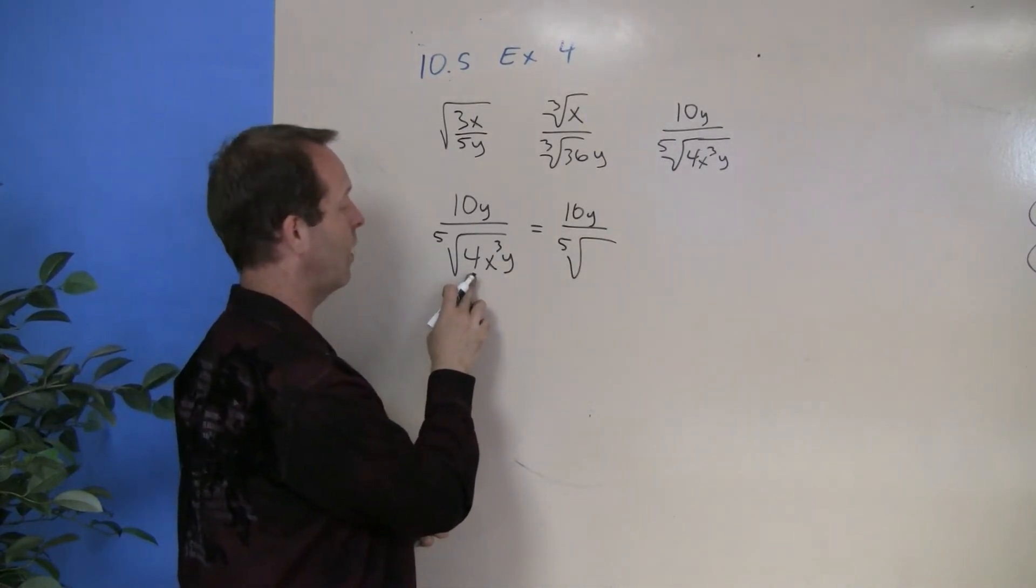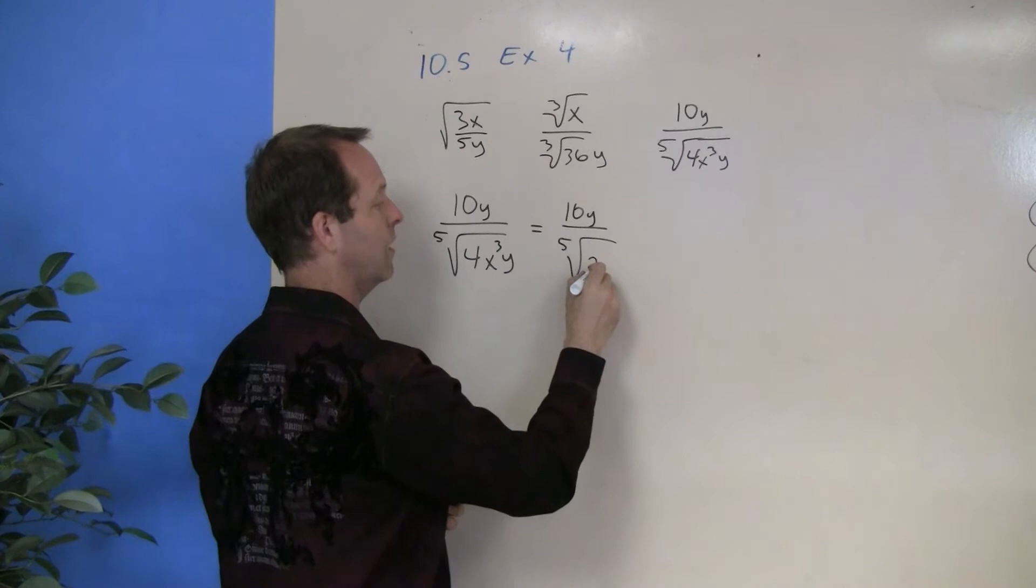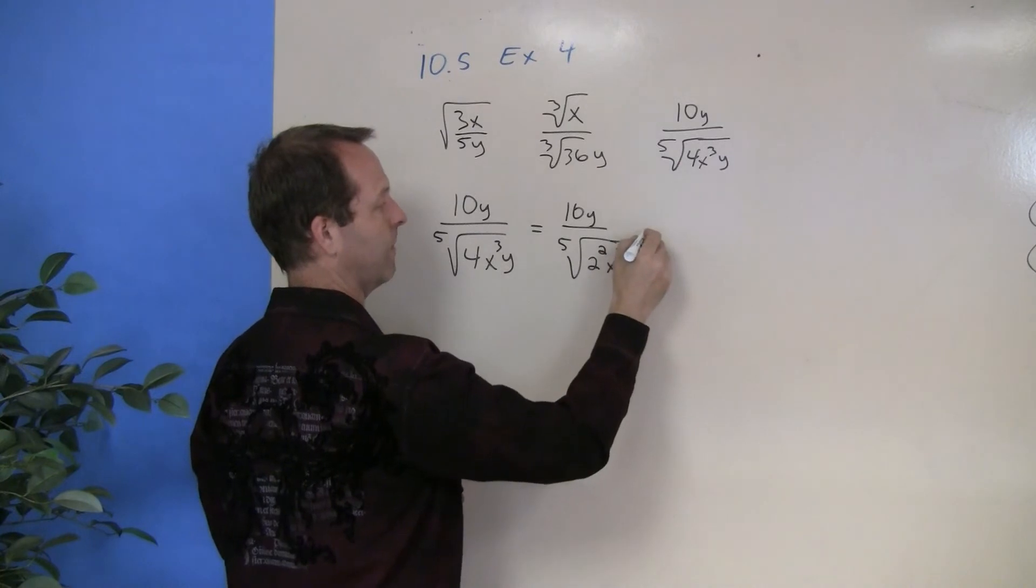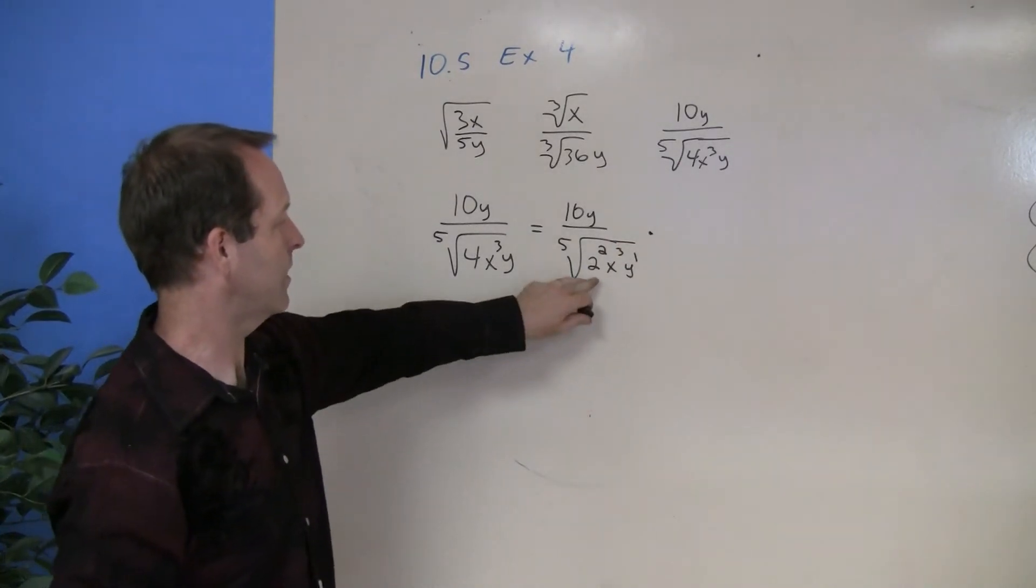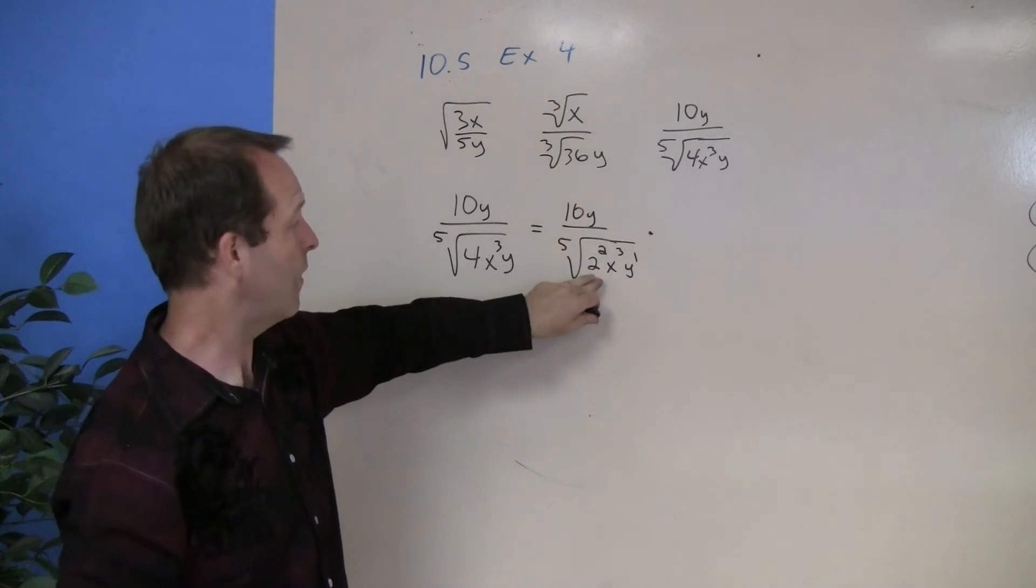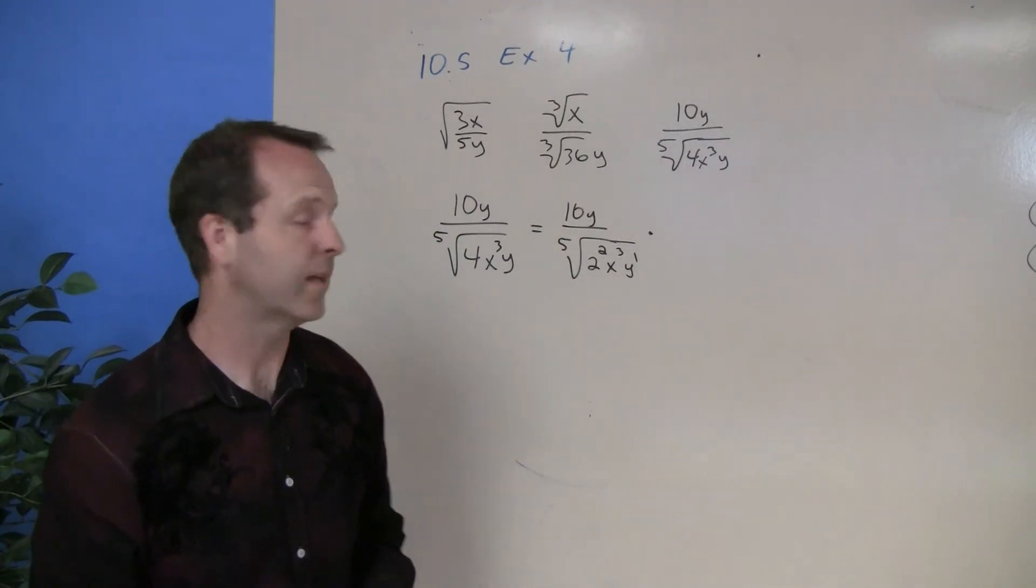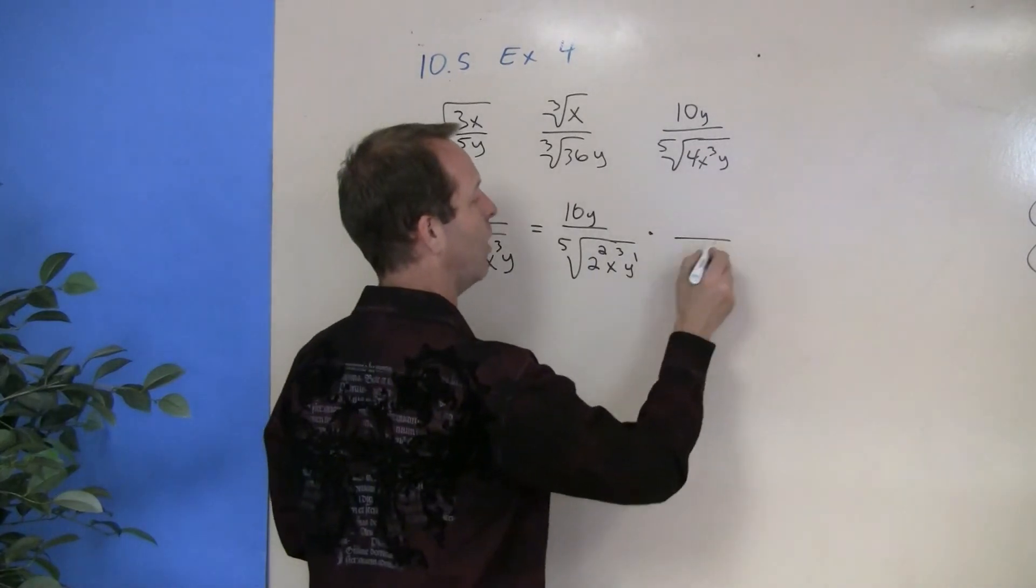4 times 4, or 4 is actually 2 squared. So that's 2 to the second power, x to the third power, and y to the first power. Well, in order for this one to have the radical removed, all these powers have to be the power to the fifth. And that will help me determine what's that clever version of one that I'm going to use.